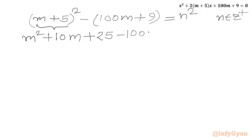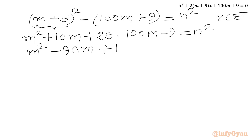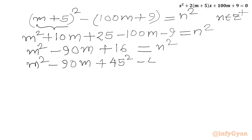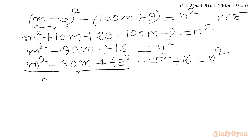Then we write minus 100m minus 9 equal to n². Simplifying the left-hand side: m² - 90m + 16 = n². Now I am going to complete the square by adding 45² and subtracting the same. These three terms give us (m - 45)².